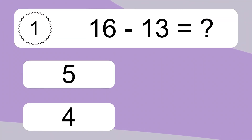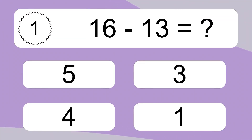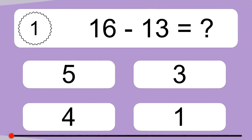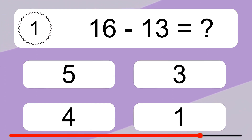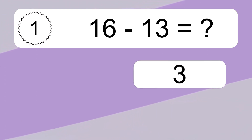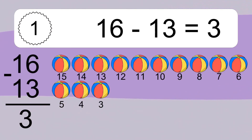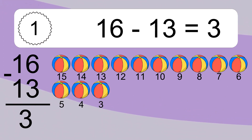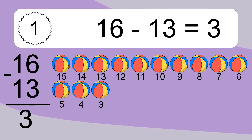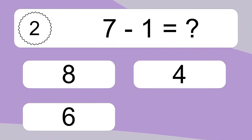16 minus 13 equals what? 16 minus 13 equals 3. Let's count it! 15, 14, 13, 12, 11, 10, 9, 8, 7, 6, 5, 4, 3.